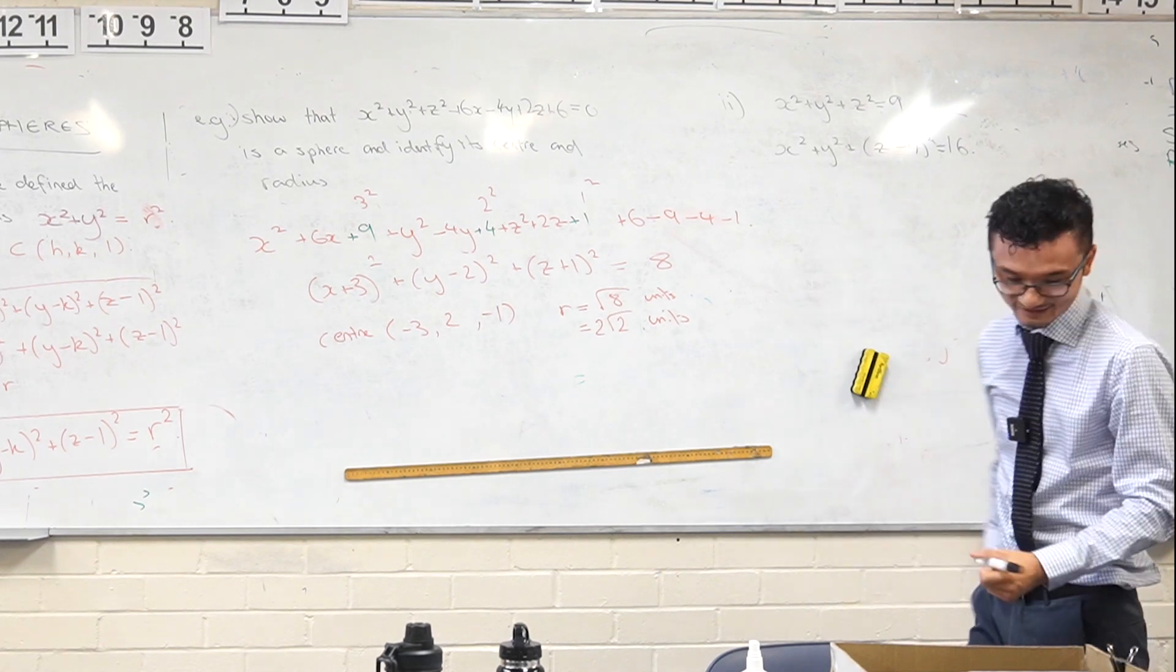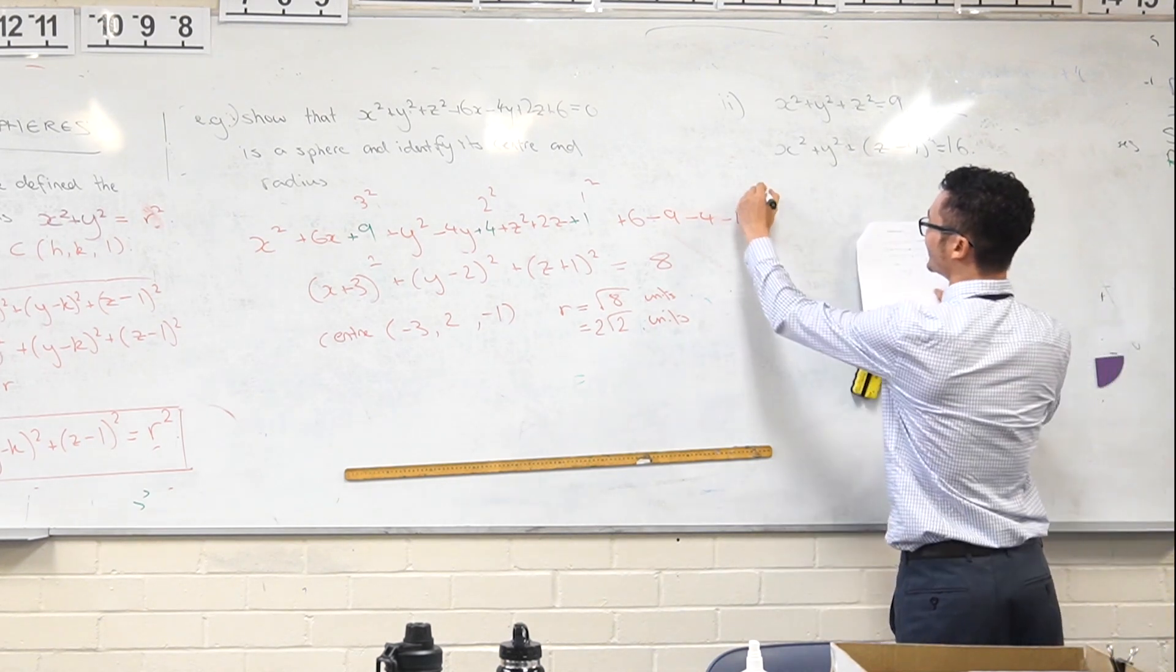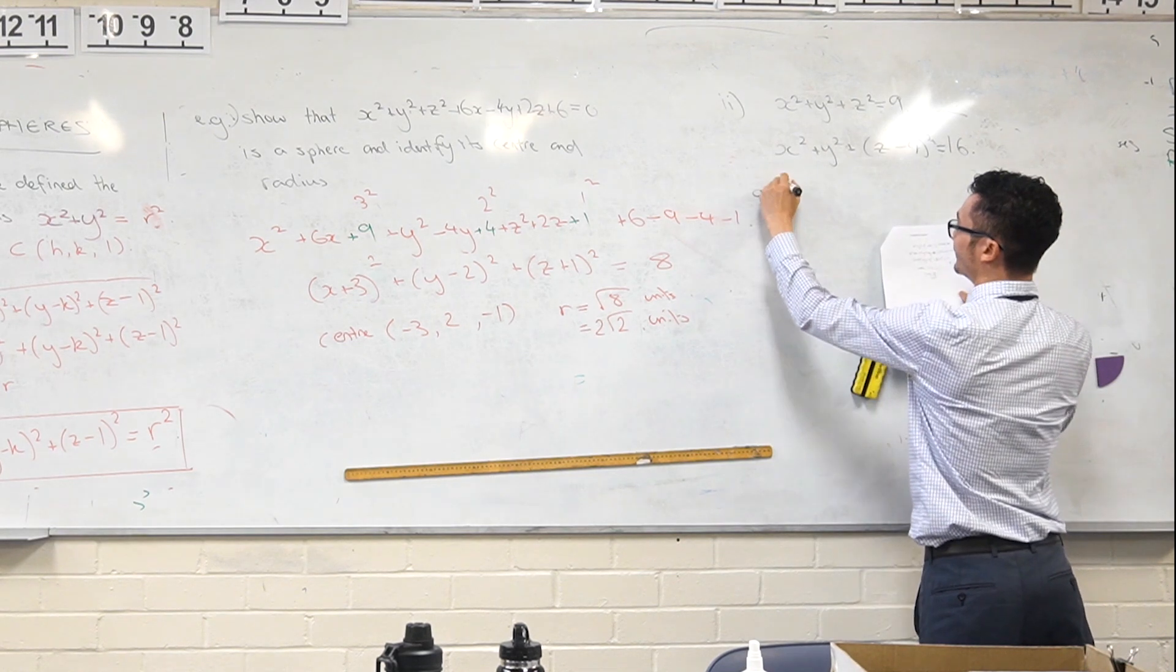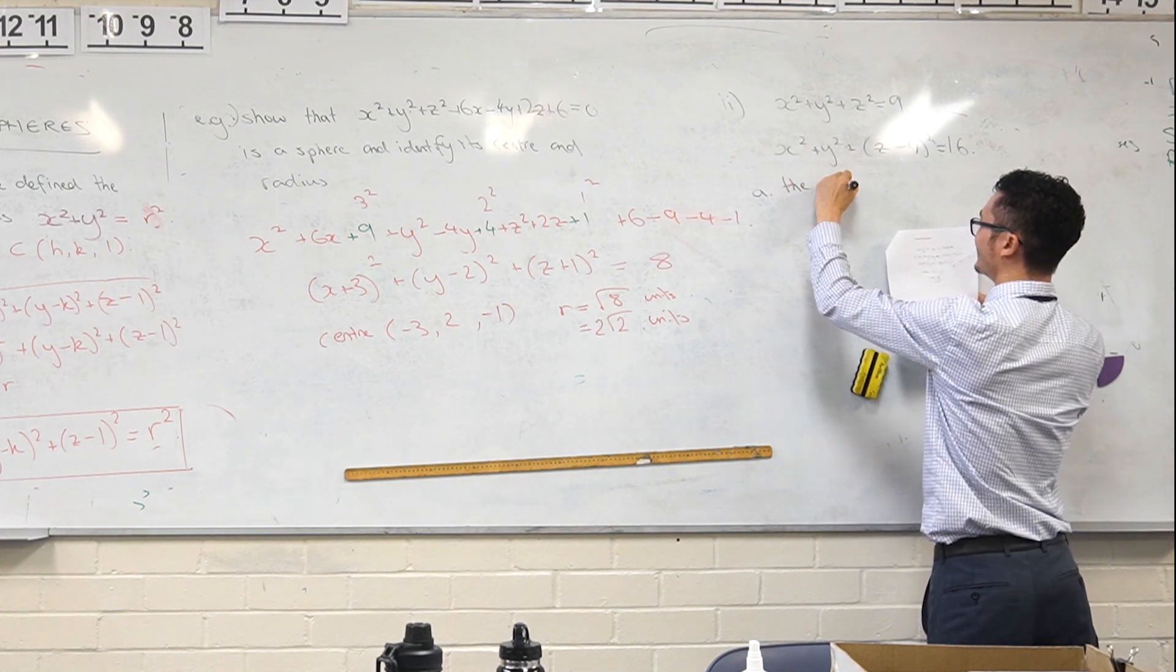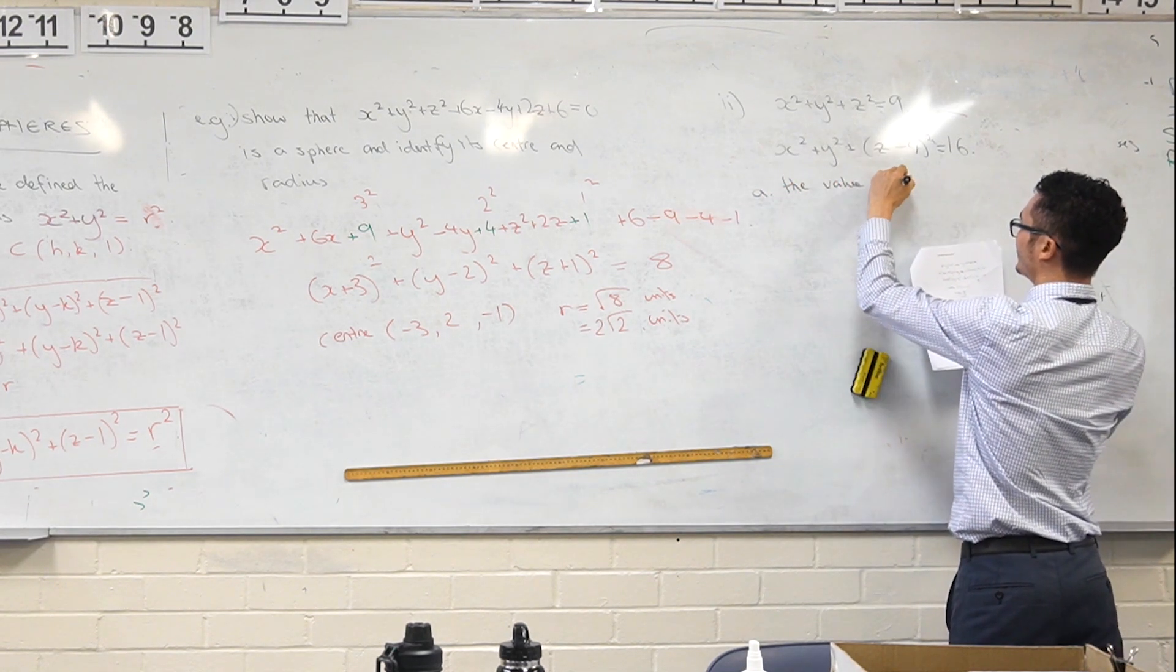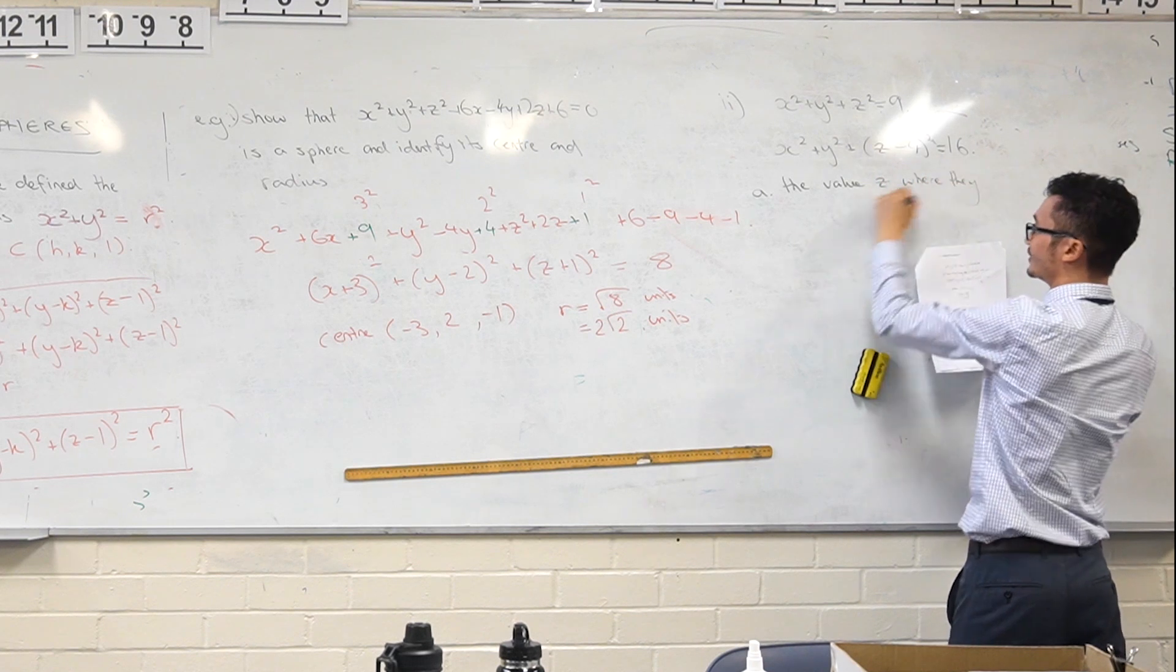So I have this guy. What are we doing with these? We want to see the value of z where they intersect. That's the first question.